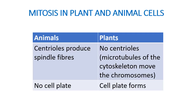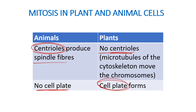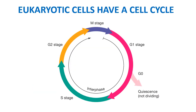Here's a summary of the differences between plant and animal cells going through mitosis. Animals have centrioles which produce spindle fibers; plants don't have centrioles — it's just the cytoskeleton that moves chromosomes. Animal cells don't form a cell plate during cytokinesis, but plant cells do, building their brand new cell wall. Once mitosis and cytokinesis are finished, we're ready to start a brand new cell cycle and begin it all again.